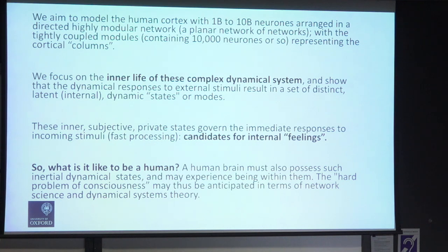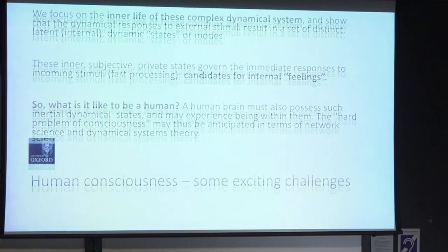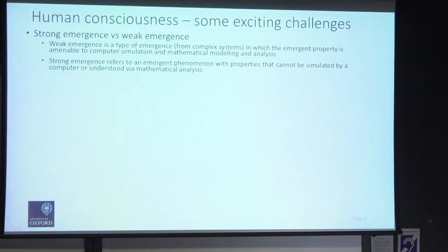Those sorts of internal dynamical states are really getting close to the hard problem of consciousness — what is it like to be a human being? Regarding strong emergence and weak emergence: weak emergence is what philosophers define as the sort of emergence we almost always look at in complex systems. It's amenable to some sort of mathematical analysis — there's a phase change, or a bifurcation, or symmetry breaking pattern formation — and we're able to analyse those things.